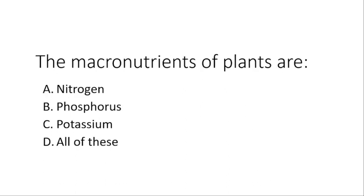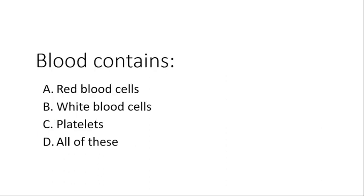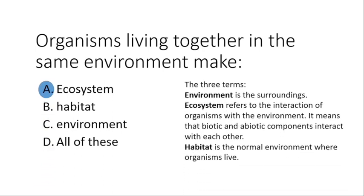The macronutrients of plants are all of these. We usually hear the term NPK fertilizers — nitrogen, phosphorus, and potassium — all three are macronutrients. Which of the given options are examples of warm-blooded animals? The correct answer is dolphin; reptiles and frogs are cold-blooded animals. Blood contains all the given types of blood cells.